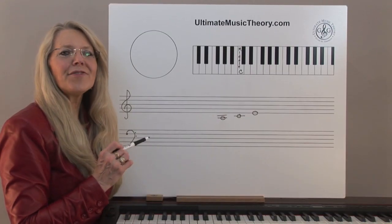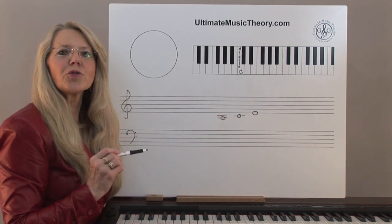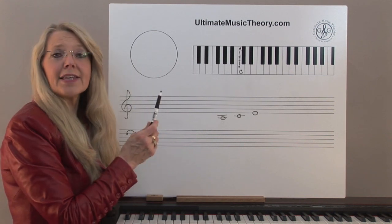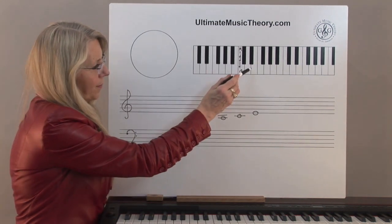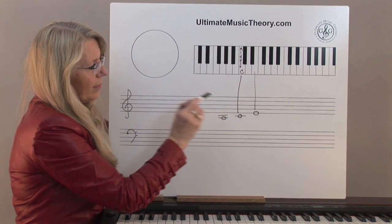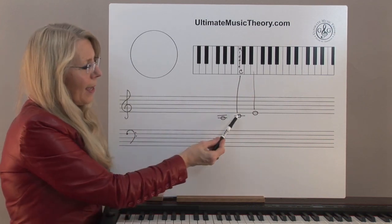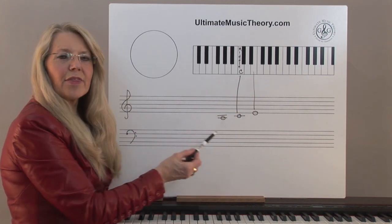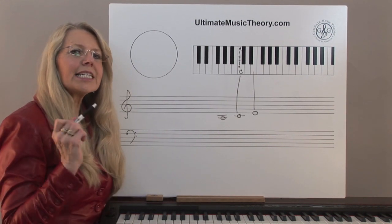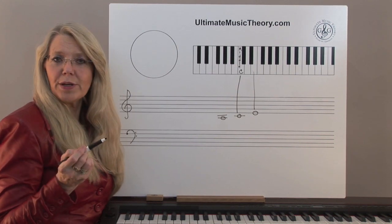Using the whiteboard, identify middle C on the keyboard. Have your students draw the corresponding lines from the notes on the staff to the keys on the keyboard at the correct pitch. Teach this using the step stone method. Step one: have students identify the note name.